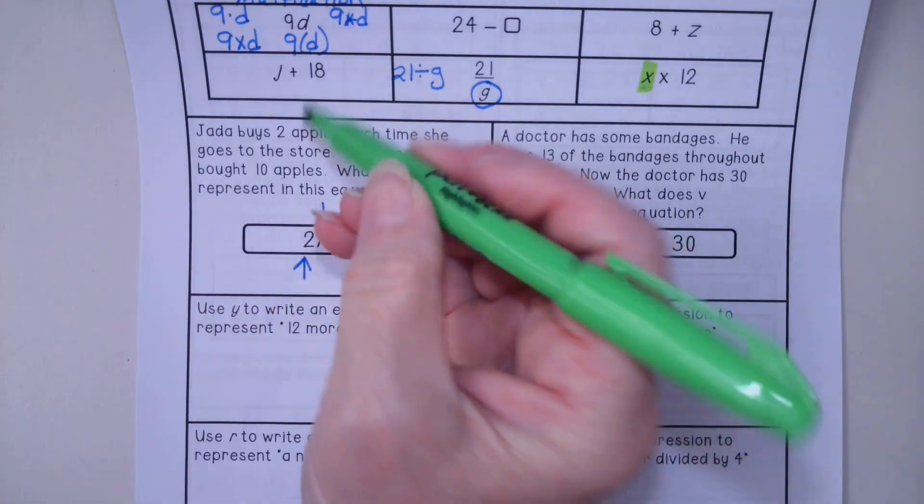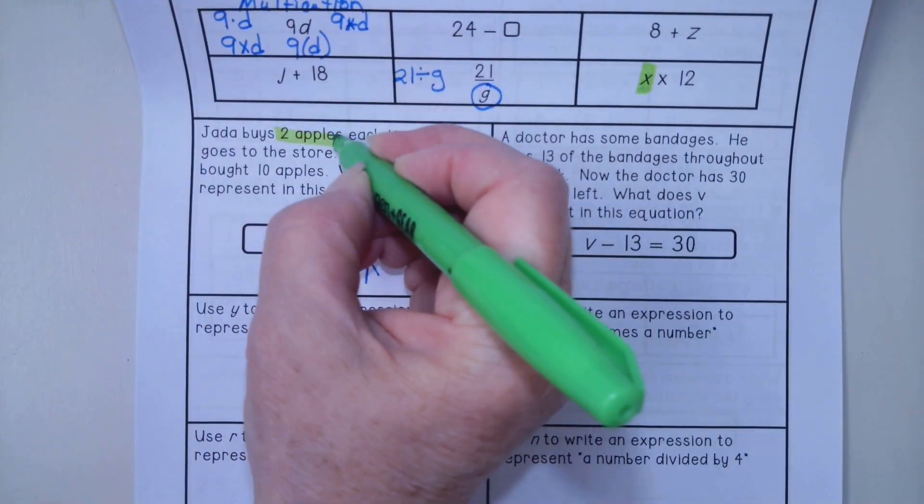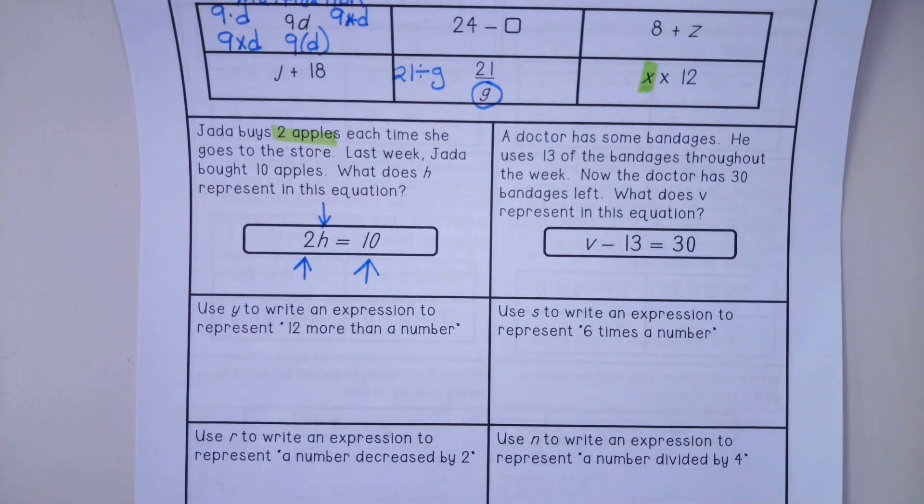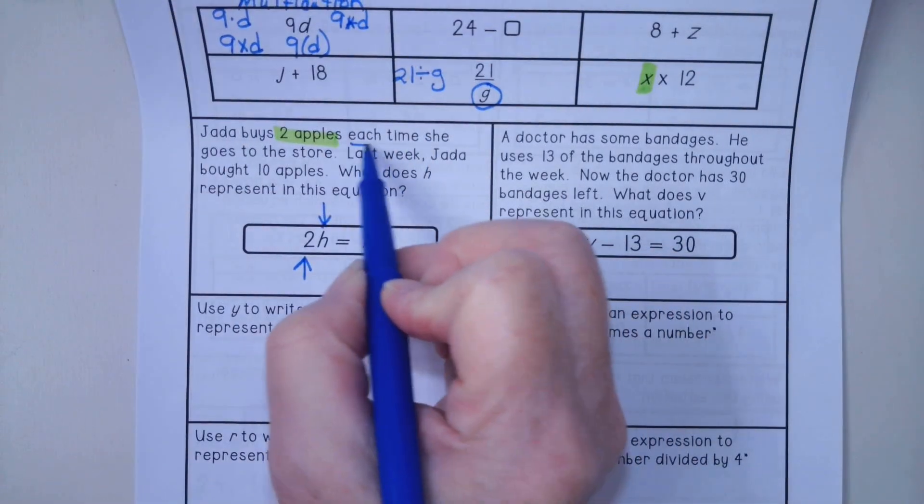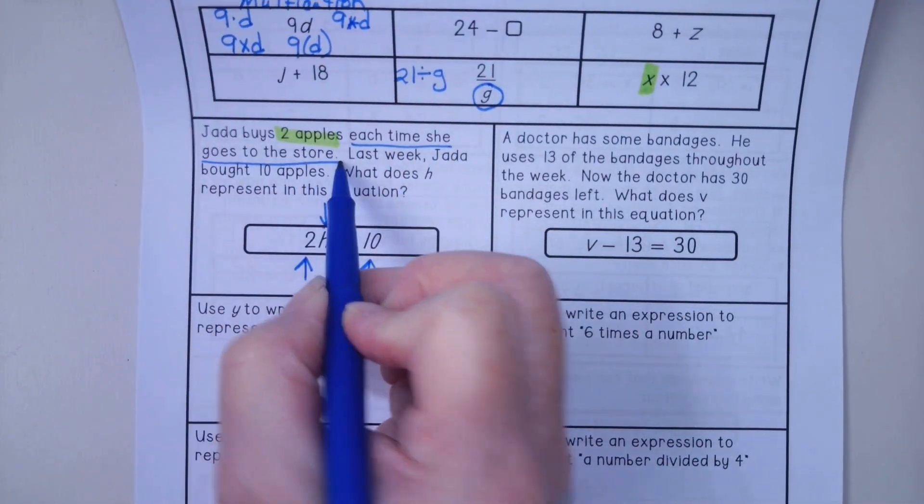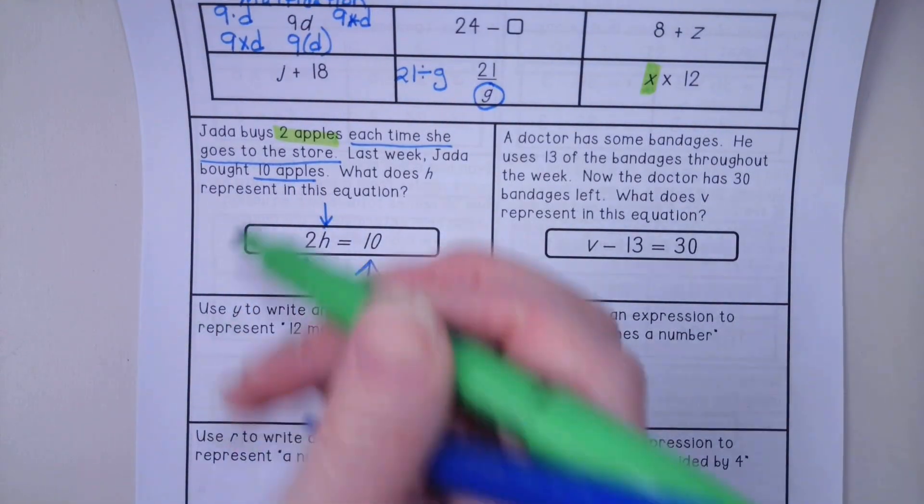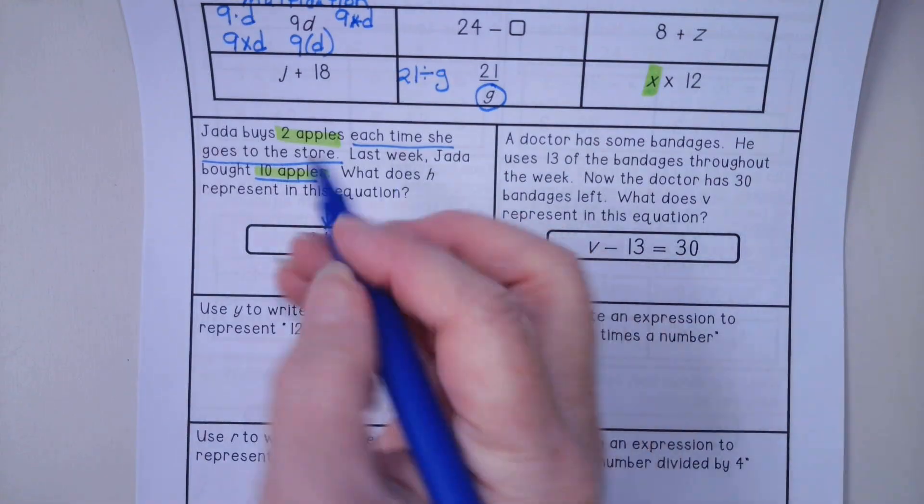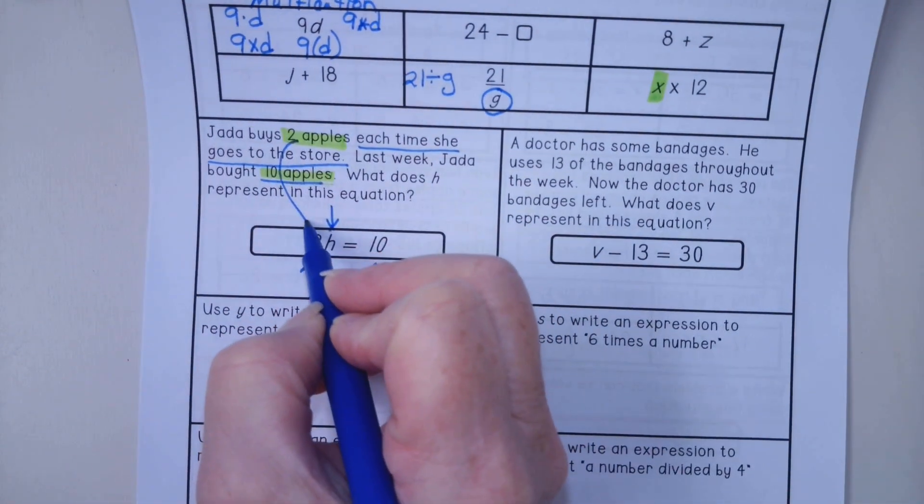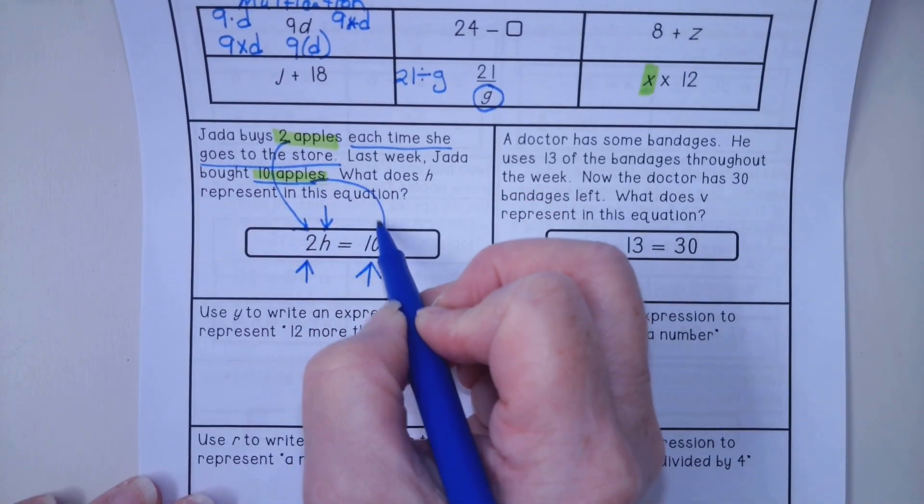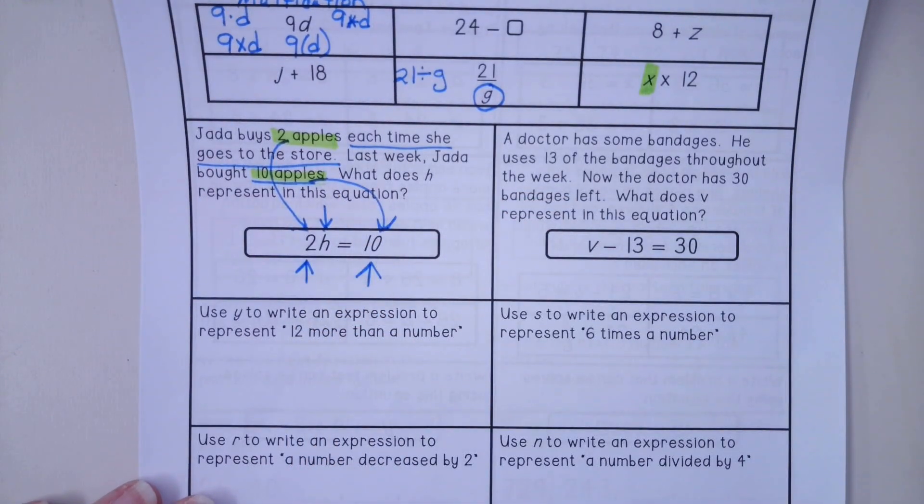And what does H stand for? Remember how we went through and we kind of highlighted... I'm going to underline this. And then you had the number of apples. We have the two, that's given. We have the 10, that's given. And it's asking us, what is the H?